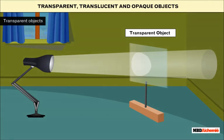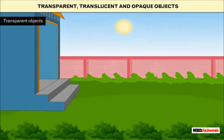The object through which light can pass is called a transparent object. It can be seen clearly through a transparent object. Air and different gases are transparent as light passes through them.